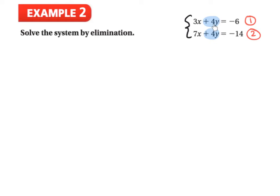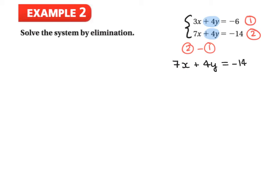Since 4 plus 4 won't give 0 but 4 minus 4 will, we subtract. We choose equation 2 minus equation 1 so that 7x minus 3x gives a positive result. Rewriting with equation 2 on top: 7x plus 4y equals negative 14, minus 3x plus 4y equals negative 6. We place a subtraction sign and subtract the two equations.